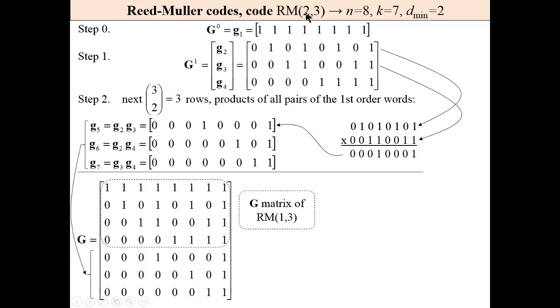The submatrix of code (1,3) is constructed, and then next three rows are added. Next three rows are products of all pairs of the first order words. For example, these two words, the product of them is presented here: 1,1 gives 1, 1,1 gives 1.